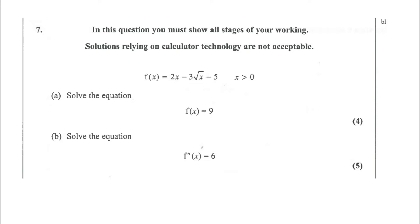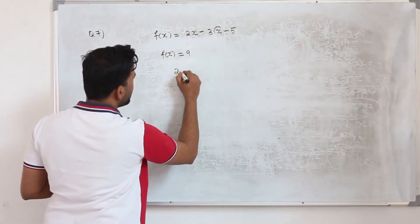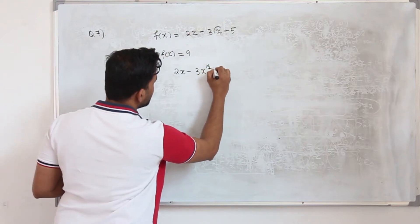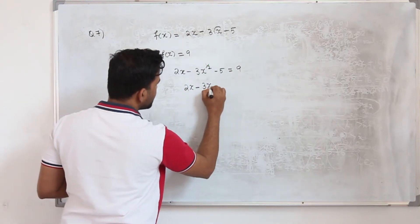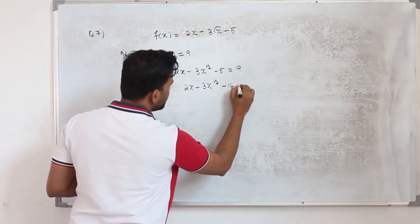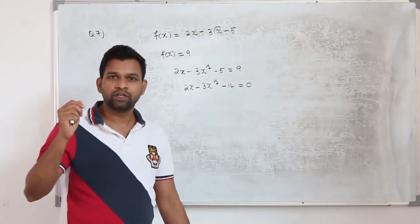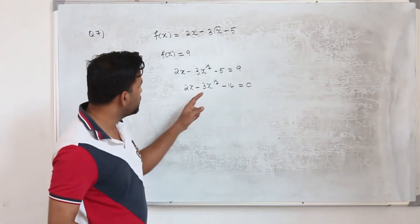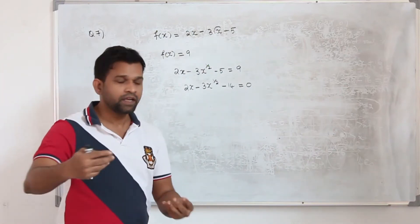Question number 7: f(x) equals 2x minus 3√x minus 5, where x is greater than 0. Part A: solve the equation f(x) equals 9, which carries four marks. So 2x minus 3x^(1/2) minus 5 equals 9, which becomes 2x minus 3x^(1/2) minus 14 equals 0. This is not a standard quadratic, so we need to convert it — in exercise 2E there are many questions of this type.